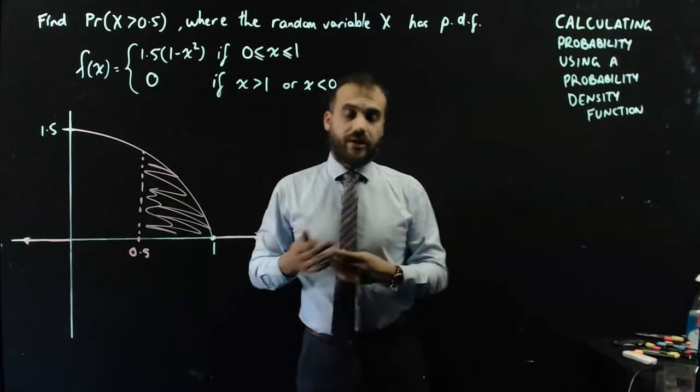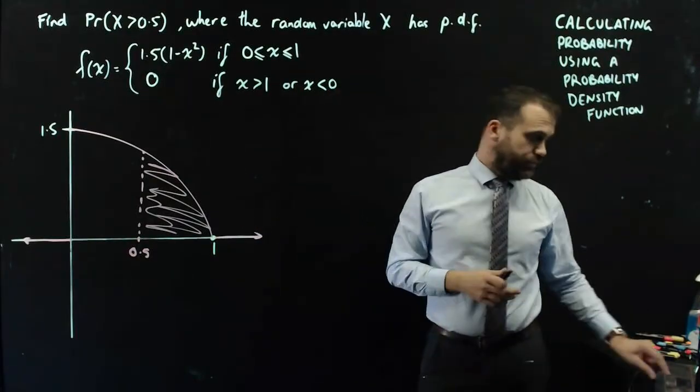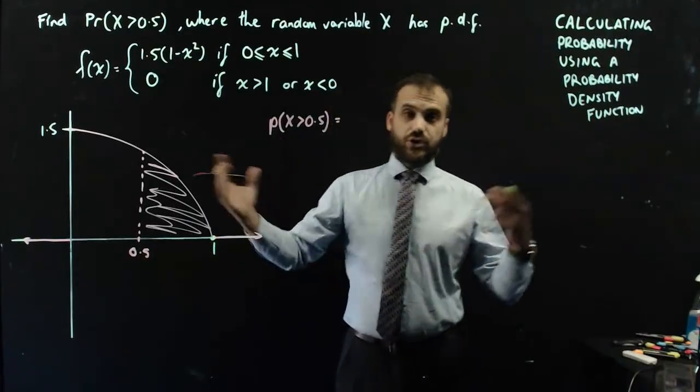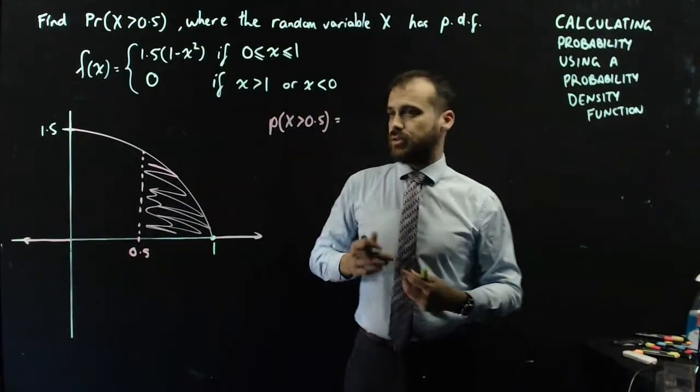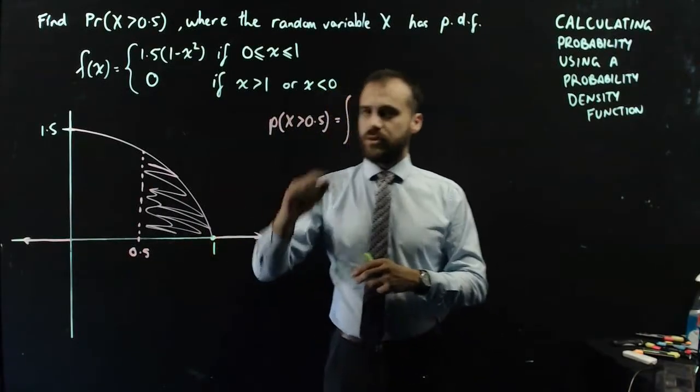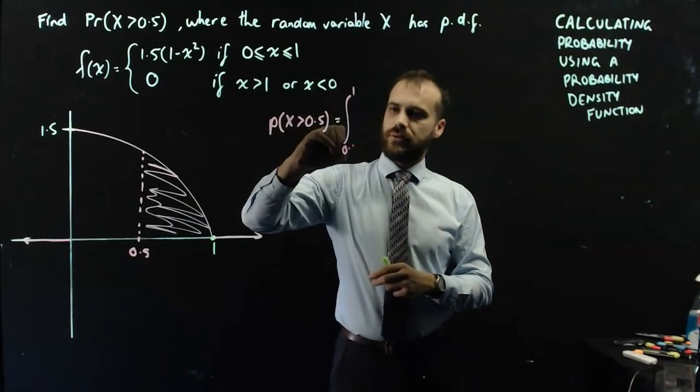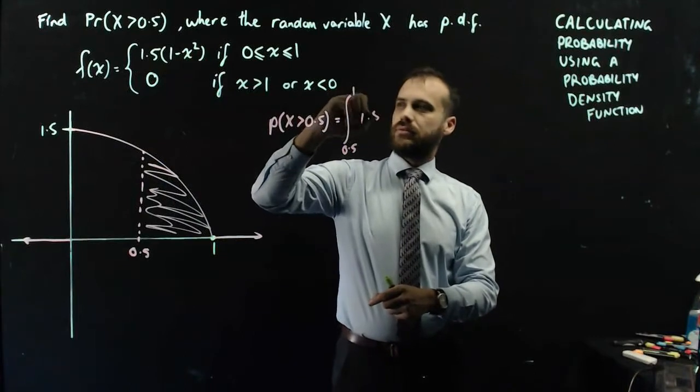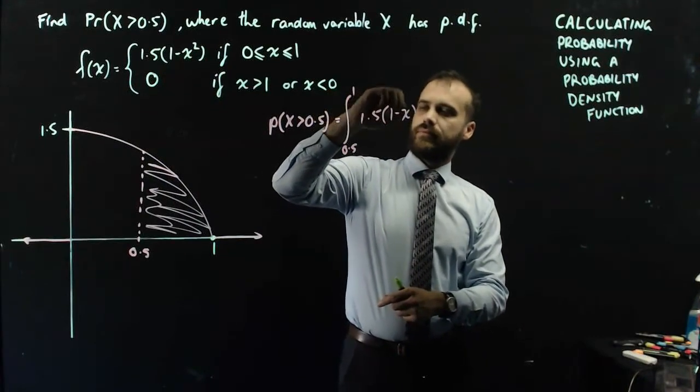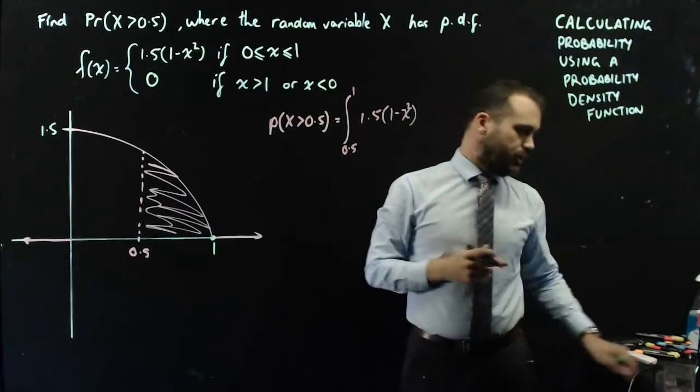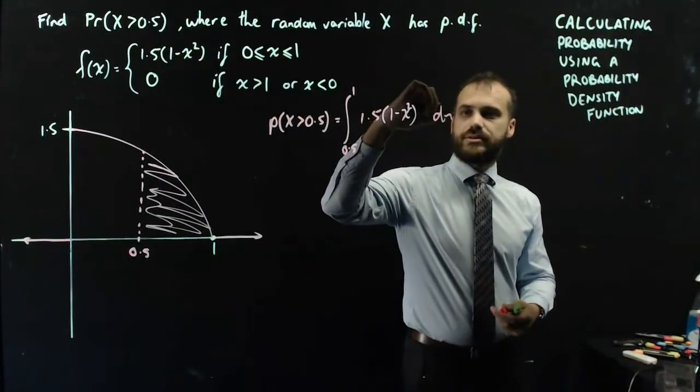And you already know how to find areas under curves. So the probability that x is greater than 0.5, that the score that the student got is greater than 0.5, is equal to the integral between 1 and 0.5 of the particular function we're talking about: 1.5(1 minus x squared), with respect to x, of course.